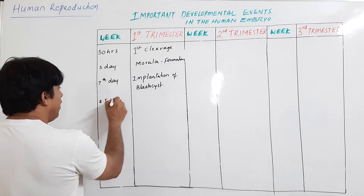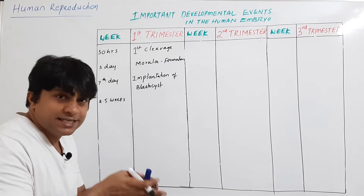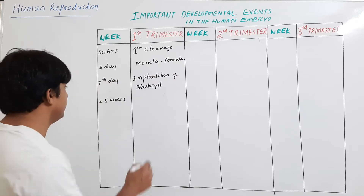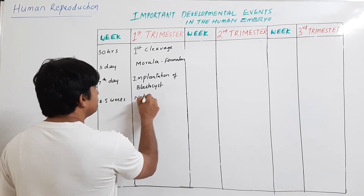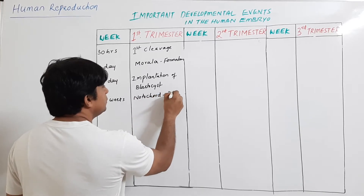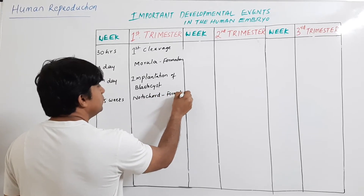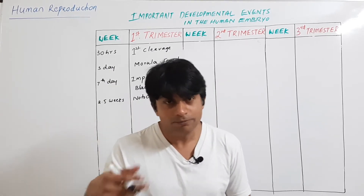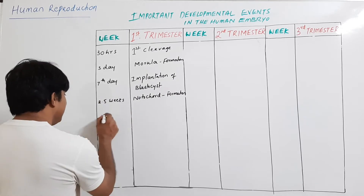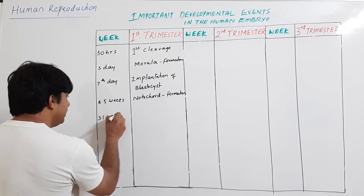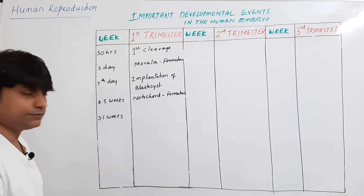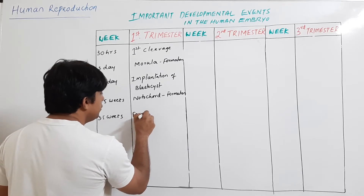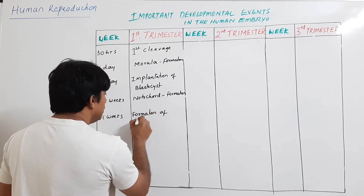After the blastocyst gets implanted, at 2.5 weeks after fertilization, notochord formation takes place — this is the notochordal sheath, which later gets transformed. This is followed by, at 3.5 weeks after fertilization, the formation of the neural tube.